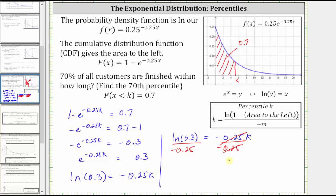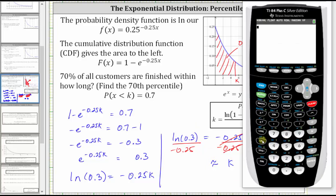Simplifying, we have k is equal to the quotient on the left, which we'll get a decimal approximation for. We have ln(0.3) divided by -0.25. To four decimal places, we have approximately 4.8159.